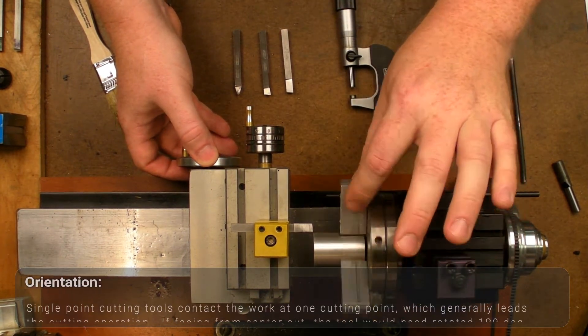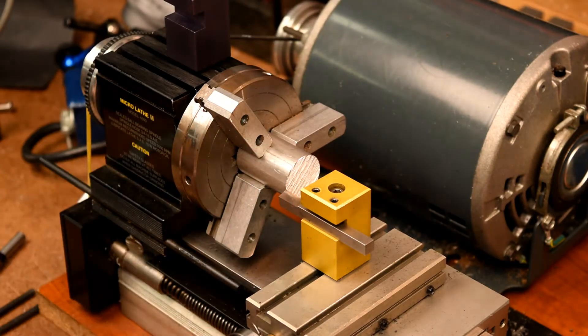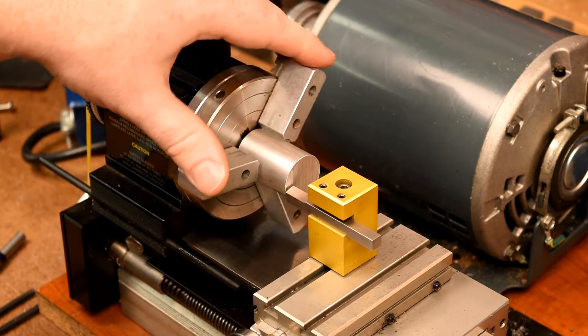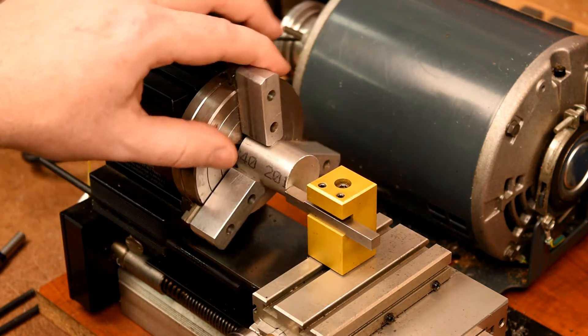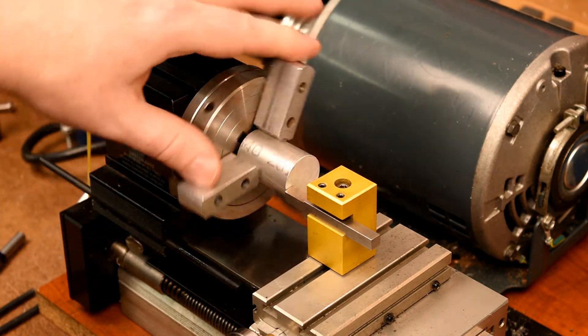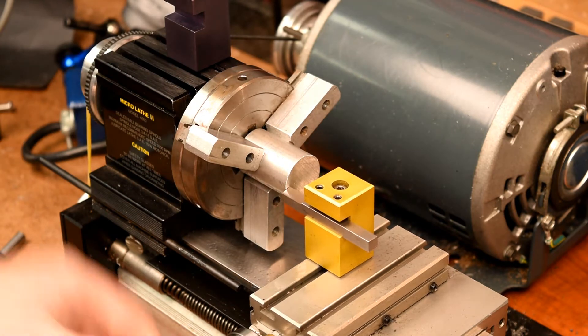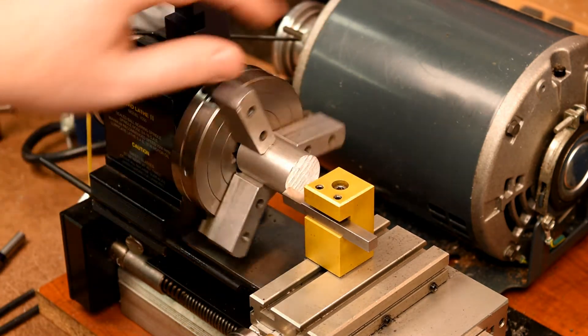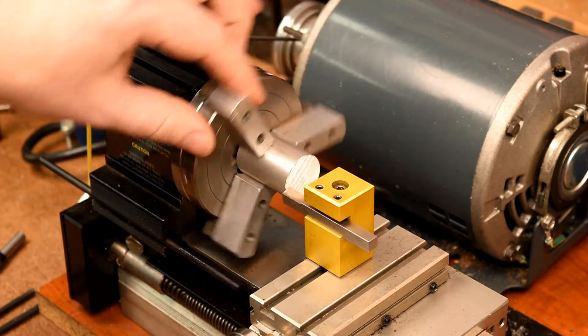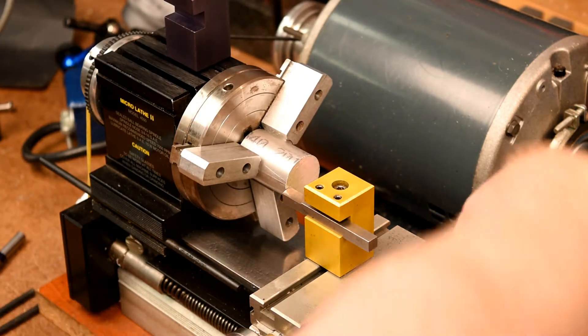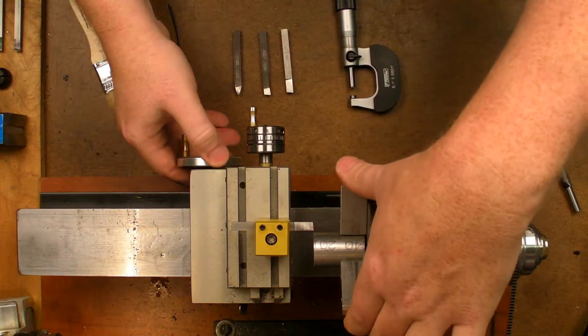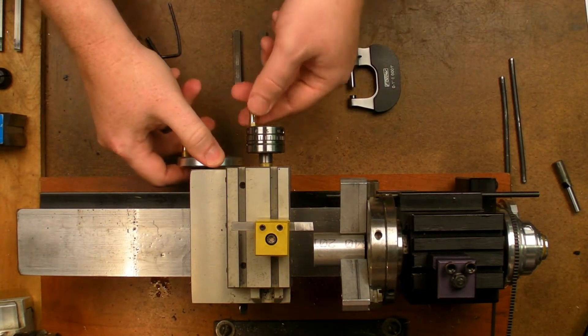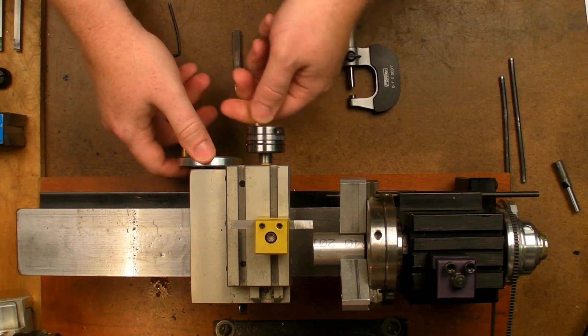All right, so the first thing we need to do with this rough cut stock is make sure that we're not going to take too deep of a cut in some areas that the tool can't handle. So we're going to find those high spots by hand turning the stock and finding wherever it's highest at. This is actually a pretty evenly cut piece of stock. So I'm just going to start right there. Now I've locked the carriage.